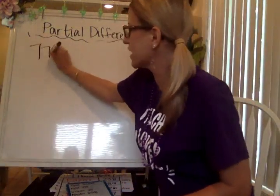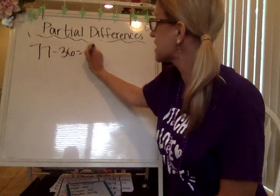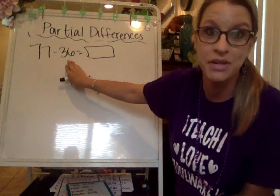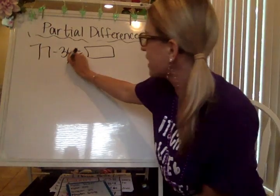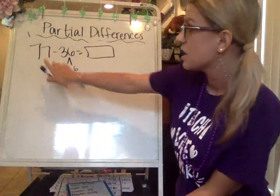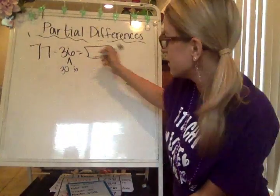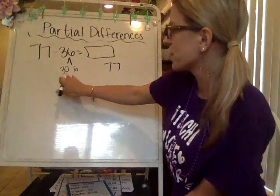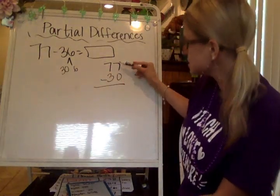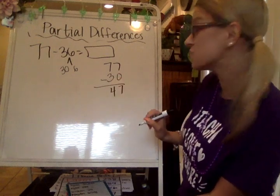If there was an equation such as 77 minus 36 and you were asked to solve this using partial differences, we're going to break 36 into a 30 and a 6. We're going to first start with 77 and then subtract the tens, which is 30 — 3 tens. So 77 minus 30 is 47.